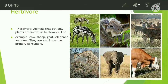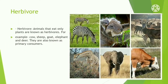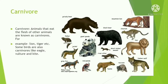Animals that eat only plants are known as herbivores. For example, cow, sheep, goat, elephant, and deer are herbivores. They are also known as primary consumers. I will explain more about primary consumers when we discuss the food chain.